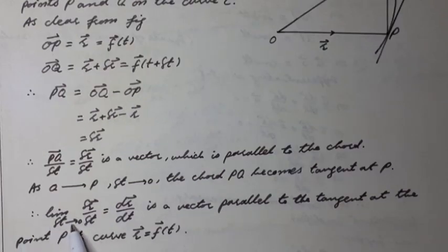Therefore, limit delta t tends to zero, delta R vector over delta t equal to dR vector over dt is a vector parallel to the tangent at the point P to the curve R vector equal to F vector of t. Note it, this is a geometrical meaning of a derivative of a vector function.